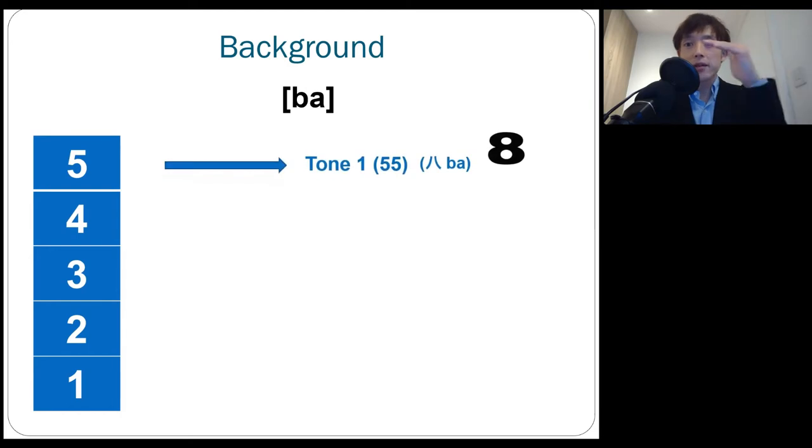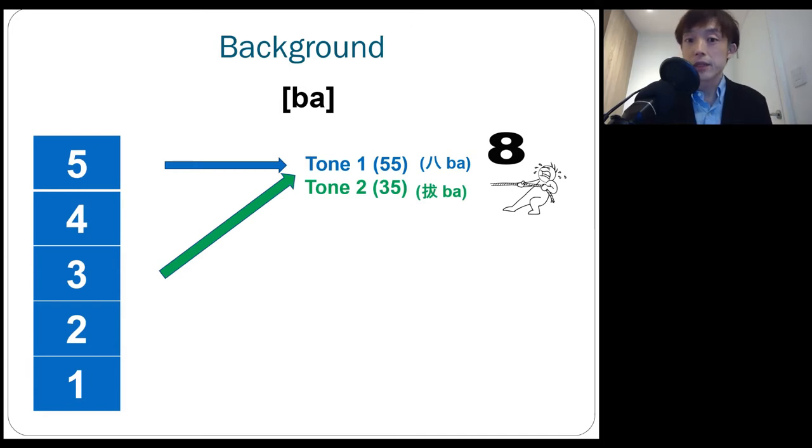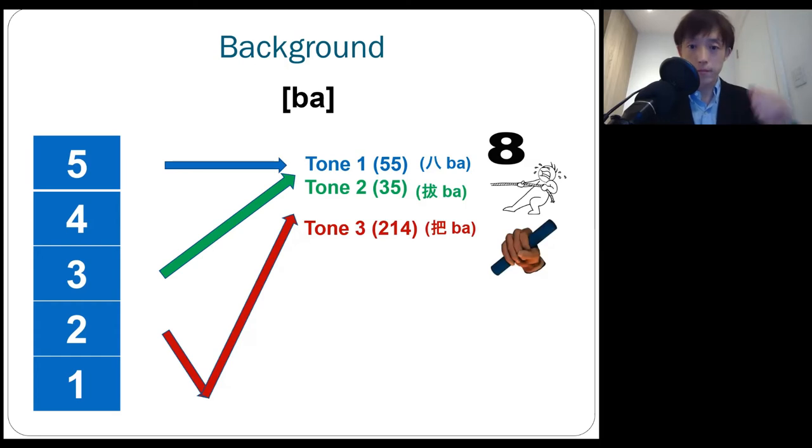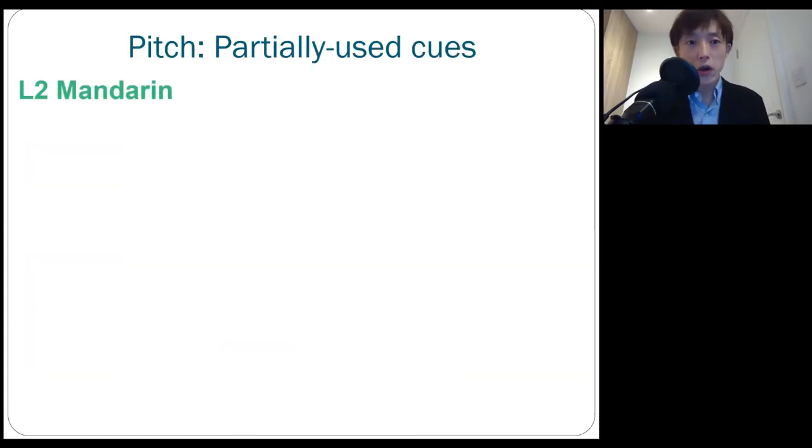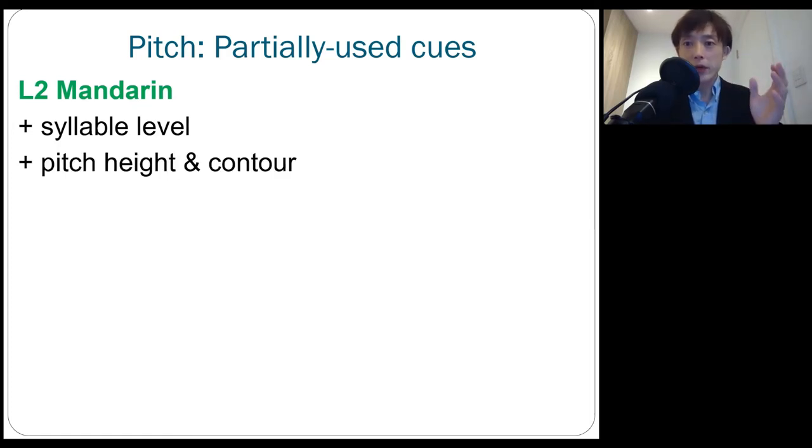So for example, if you use a flat tone, ba, that means eight. But if you use rising tone, ba, that means pull. But if you use falling and rising tone, ba, that means grab. And finally, when you use the falling tone, ba, that means father. As you can see here, pitch information can be used within the one syllable level. And very importantly, pitch can be used not only for height, but also for contour, how pitch is traveling within the one syllable.